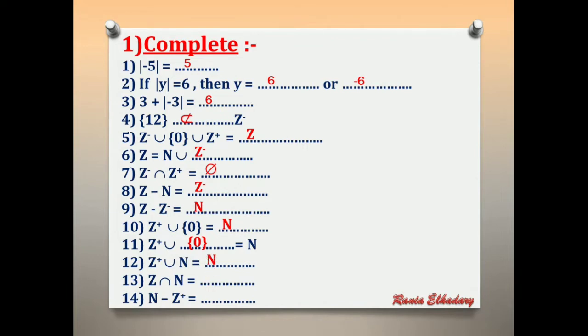Number 13: Z intersection natural number equals what? The intersection sign gives us the smallest set. The smallest set is natural.